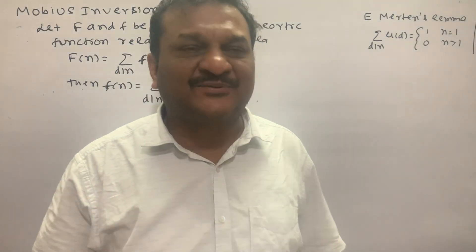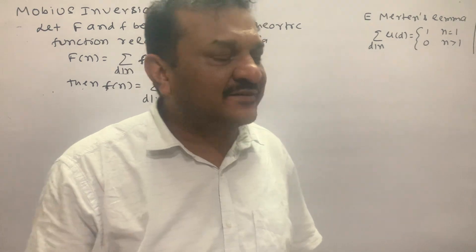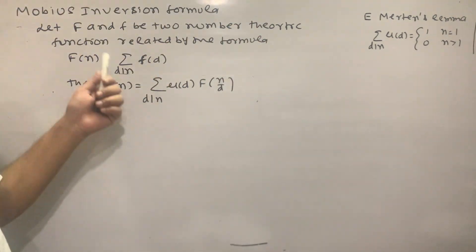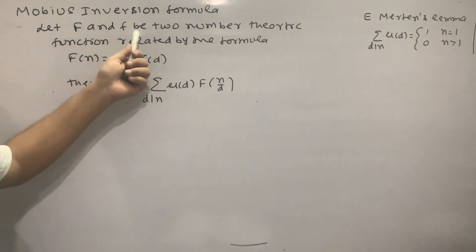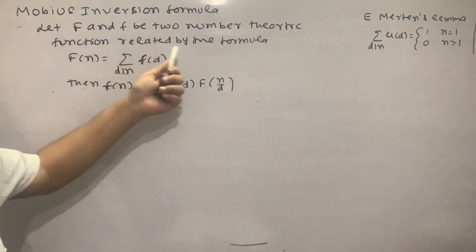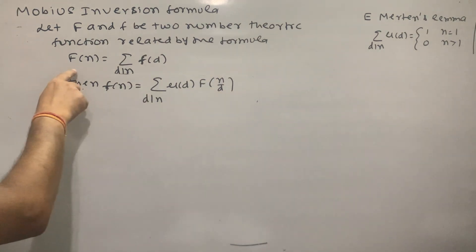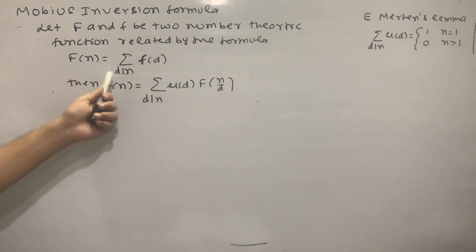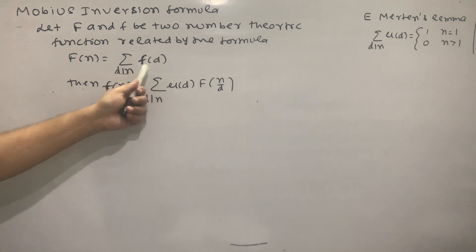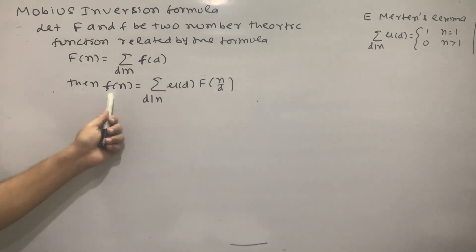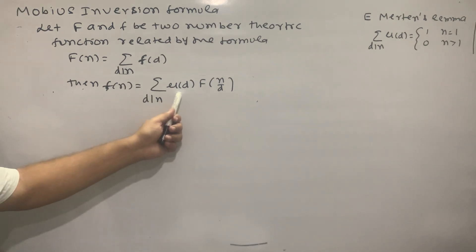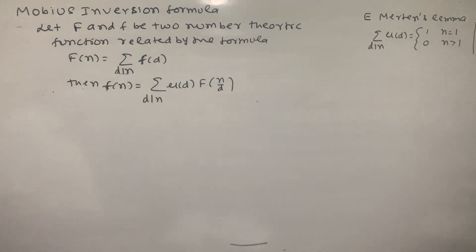Hello students, today we will start Möbius Inversion Formula. Let capital F and small f be two number theoretical functions related by the formula F(n) equal to summation over d dividing n of f(d). Then f(n) equal to summation over d dividing n of μ(d) times F(n/d).